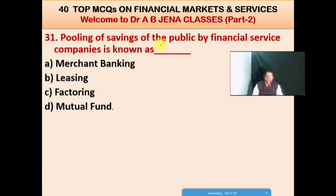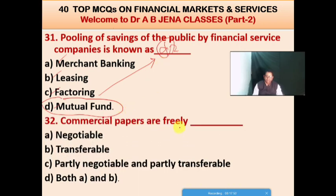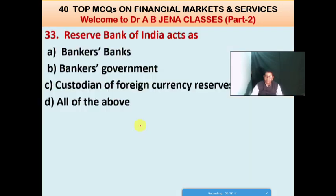Next MCQ: the pooling of savings of the public by financial service companies is known as what? A: merchant banking, B: leasing, C: factoring, D: mutual fund. D is the right option — pooling of savings of the public by financial service companies is known as a mutual fund. Next MCQ: commercial papers are freely what? A: negotiable, B: transferable, C: partly negotiable and partly transferable, D: both A and B. D is the right option — commercial papers are freely negotiable as well as transferable.